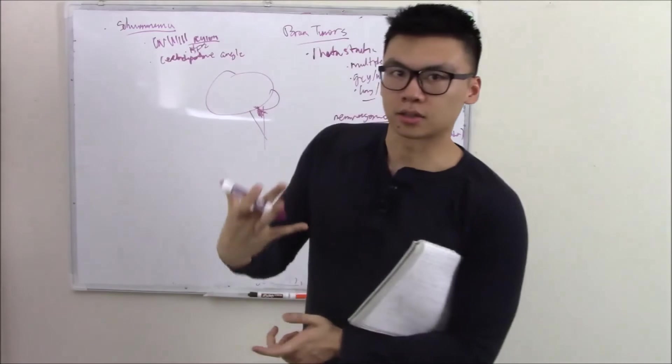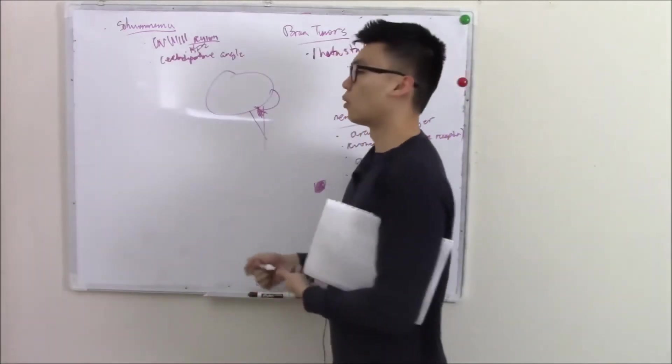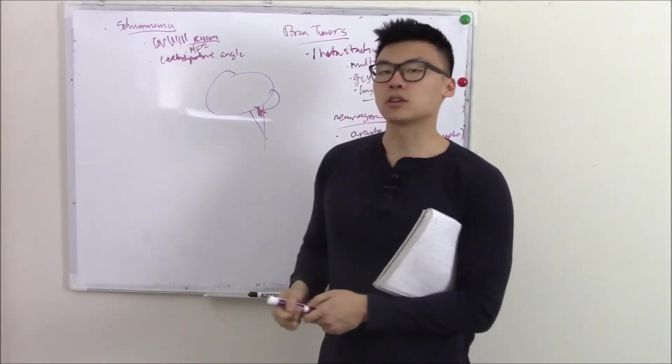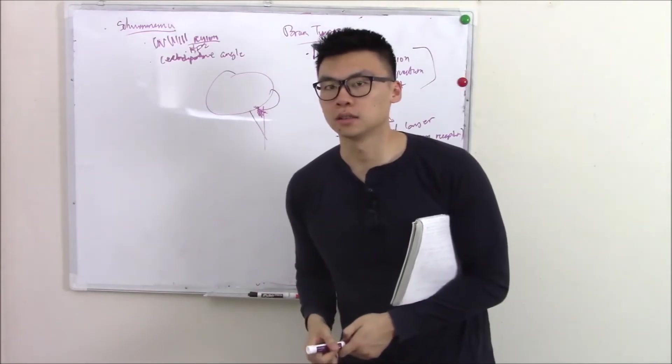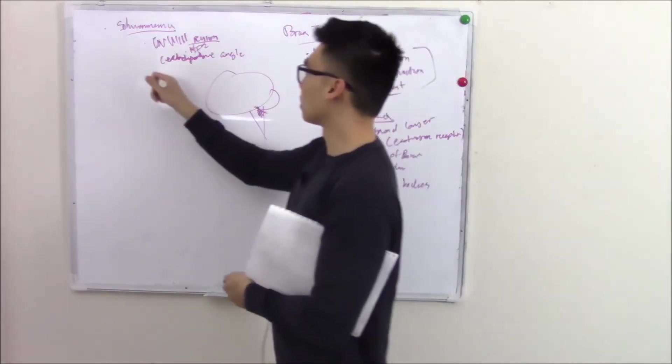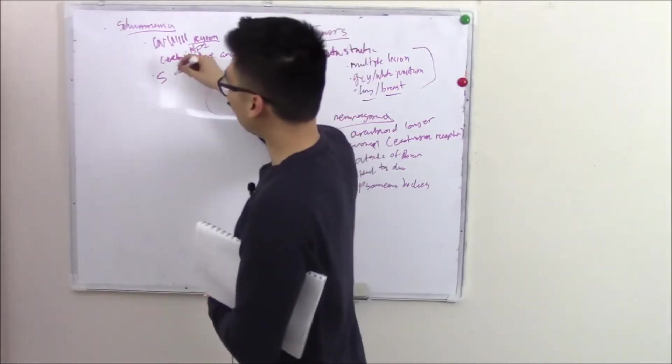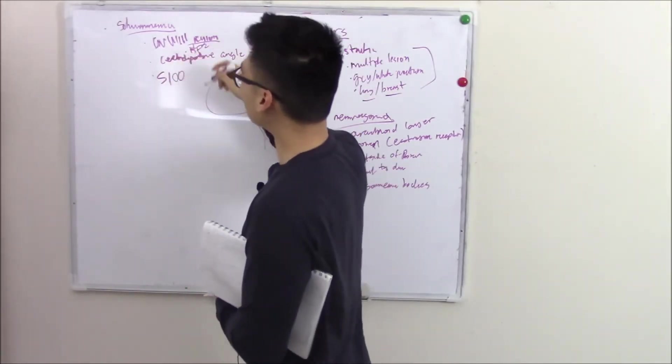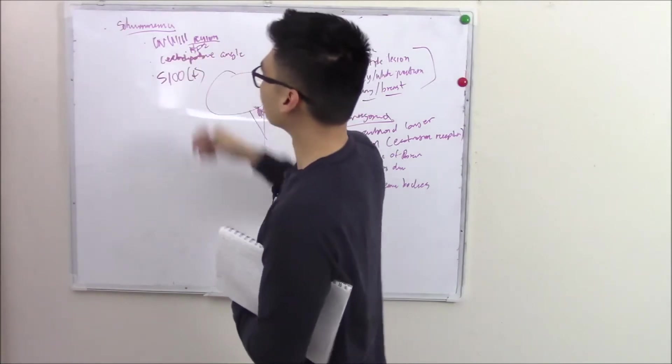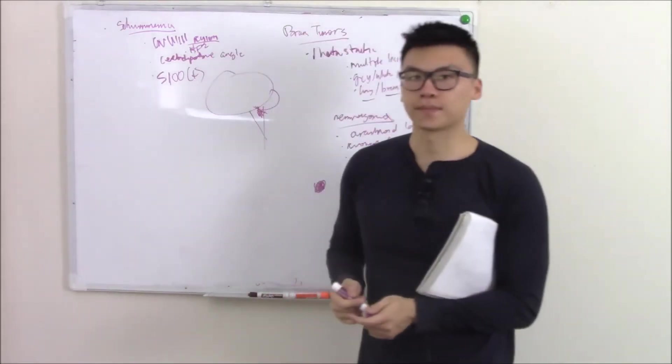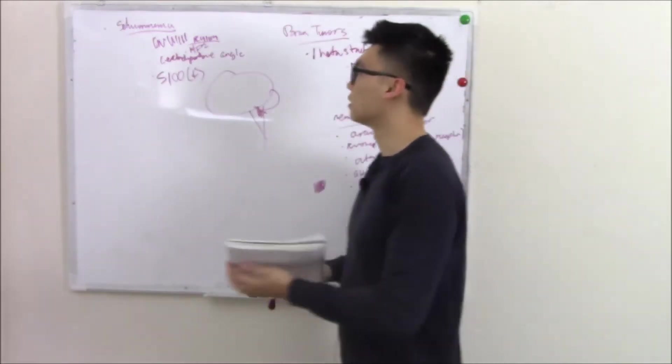Now, how do we know these cells are your Schwann cells? Well, we have markers for that. Where do your Schwann cells come from again? They come from your neural crest. And one of the biggest markers for your neural crest and a lot of other stuff, but mainly your neural crest is S100. And so these cells will be S100 positive. Gotta know that. S100 positive. That's your Schwann cells.